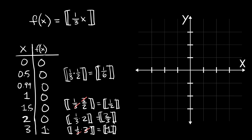So we have our first step starting at (0,0), staying flat at y=0 all the way until x=3. The second step starts at (3,1). Since each step is 3 units long, we extend that step 3 units. Going in the negative direction, we go down 1 unit in y and over 3 in x to get the previous step — with an open circle at the right end.